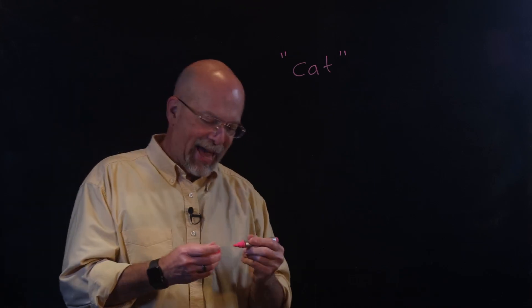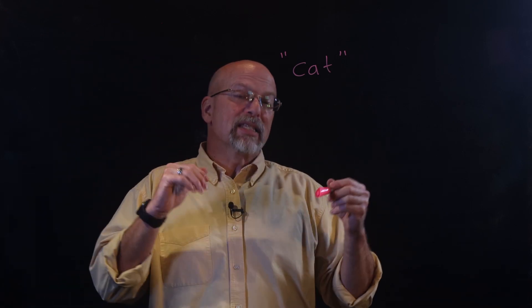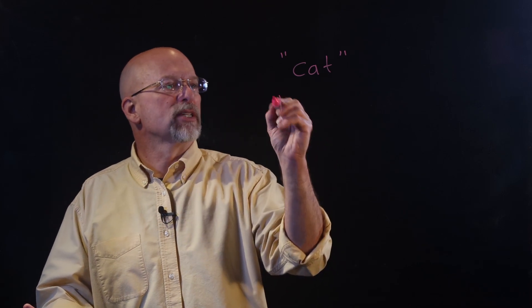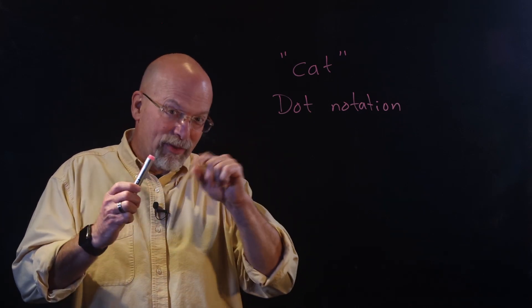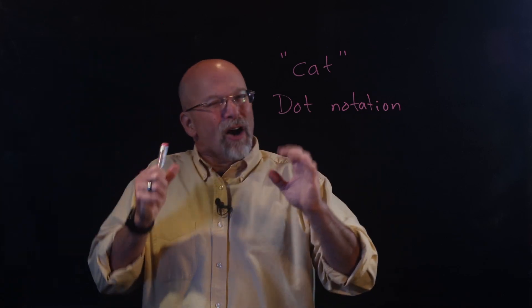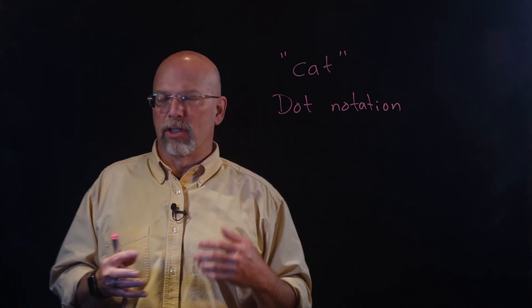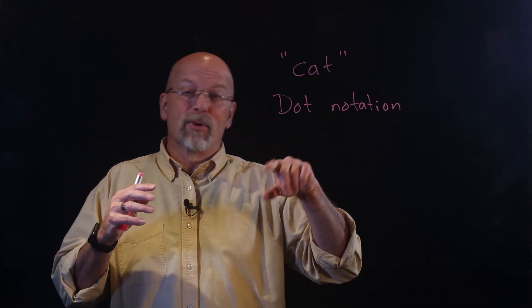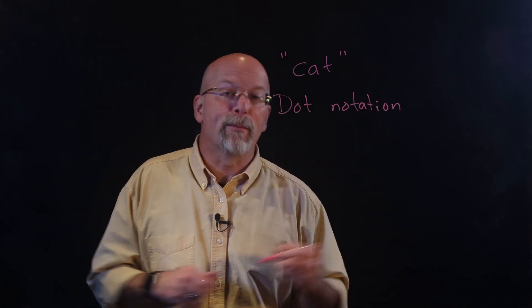Let's get back to this idea of concatenation. Whenever we created a word like 'cat,' we had three elements that were concatenated — brought together. There are a couple of ways we represent this in discrete math. The first is with dot notation: like putting a dot between 5 and 6 to say 5 times 6, when it comes to strings the dot usually represents concatenation. Unfortunately, there's no consistency across programming languages — some use a plus sign, some use ampersand — but in discrete math we use the dot to represent concatenation.